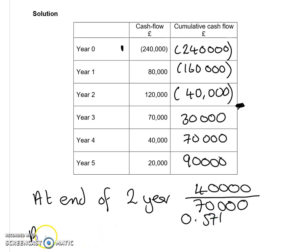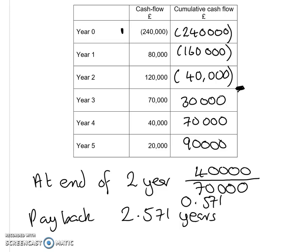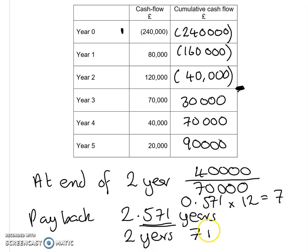So our payback would be 2.571 years. We can also express that more naturally — we can take this element and express it in months. If we take 0.571 and multiply that by 12, that comes to seven months. So we can express that as two years and seven months.